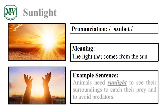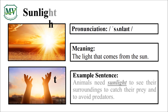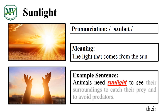Sunlight. Please repeat the word after me. Sunlight. Good job! Let's spell it. S-U-N-L-I-G-H-T. Sunlight. Great! Animals need sunlight to see their surroundings, to catch their prey, and to avoid predators. Can you try reading the sentence on your own?